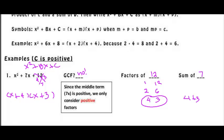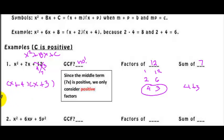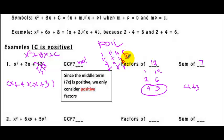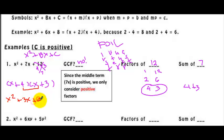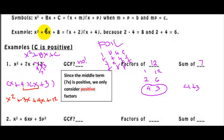Don't forget to check your answer using the FOIL method — First, Outer, Inner, Last. First: x times x gives x squared. Outer: x times 3 gives 3x. Inner: 4 times x gives 4x. Last: 4 times 3 gives 12. Combining like terms gives x squared plus 7x plus 12, which is the original problem. So we are confident that x plus 4 times x plus 3 is correct.